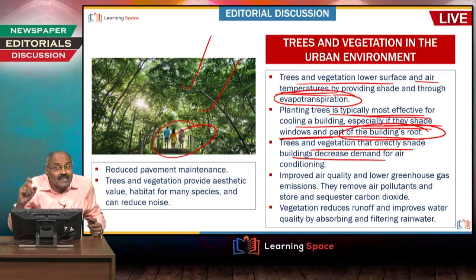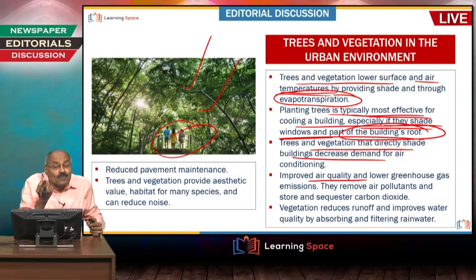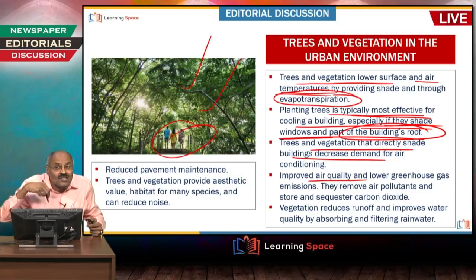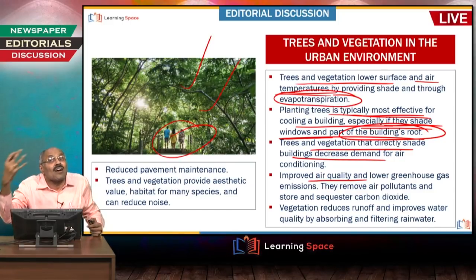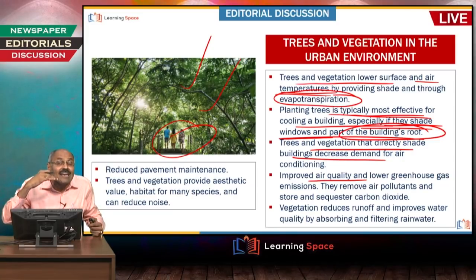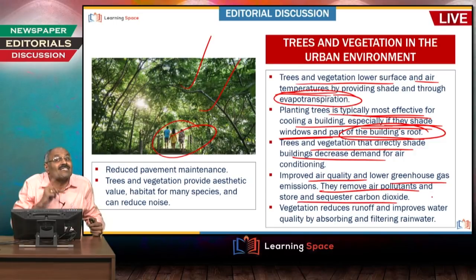Air conditioning demand will be reduced. Because of trees, there is improved air quality and lower greenhouse gas emissions. Trees remove air pollutants — they absorb certain air pollutants and store and sequester carbon dioxide. Green cover sequesters carbon dioxide, so if more green cover is present, the carbon dioxide in the environment will be reduced. This is very important.